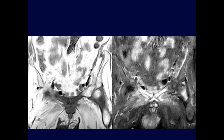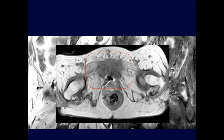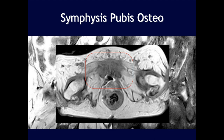Diffuse marrow edema surrounding the pubic symphysis with marrow edema extending to the left femoral head and neck junction. This is concerning for chronic osteomyelitis, likely in a bedridden patient given the prominent fat and minimal muscle bulk visible.